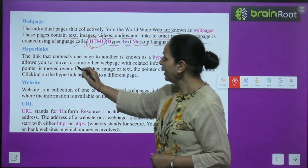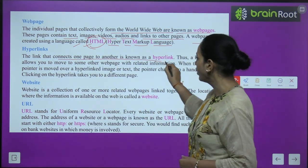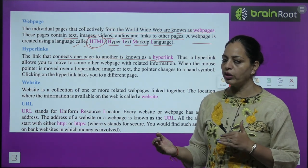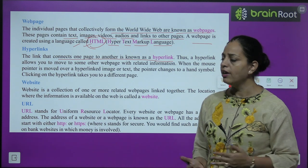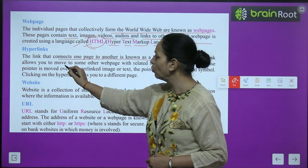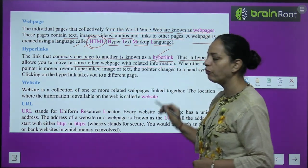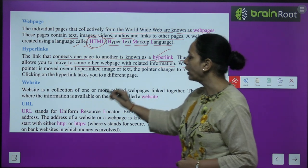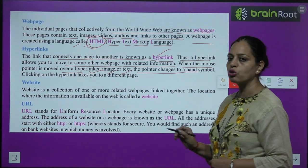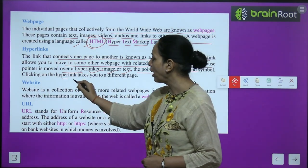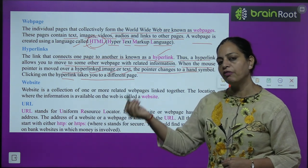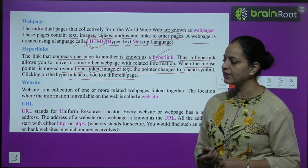Hyperlinks: the link that connects one page to another is known as a hyperlink. Web pages that are connected to each other are connected through a link — that link is called a hyperlink. A hyperlink allows you to move to another web page with related information. When the mouse pointer is moved over a hyperlinked image or text, the pointer changes to a hand symbol. Clicking on the hyperlink takes you to a different page.